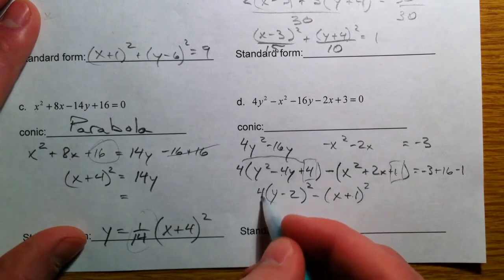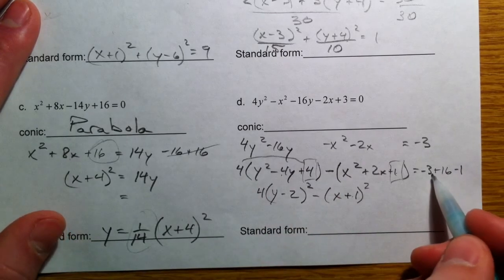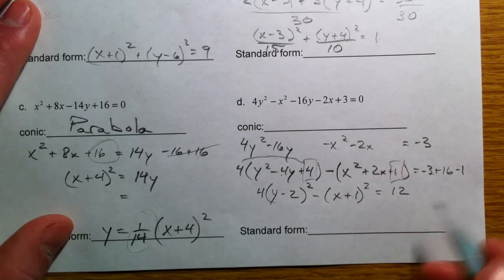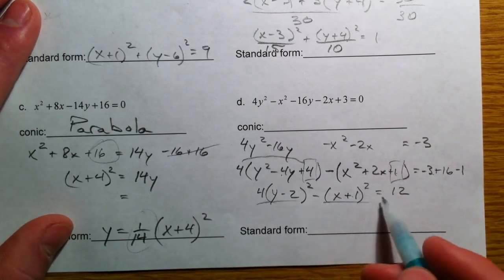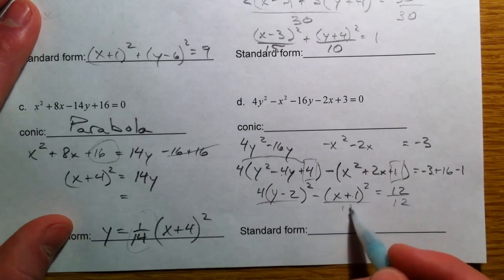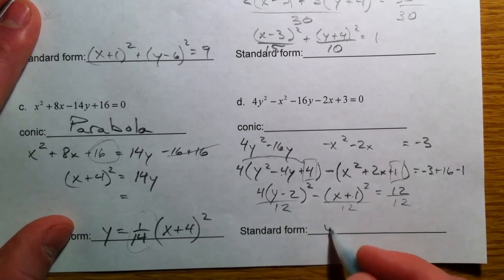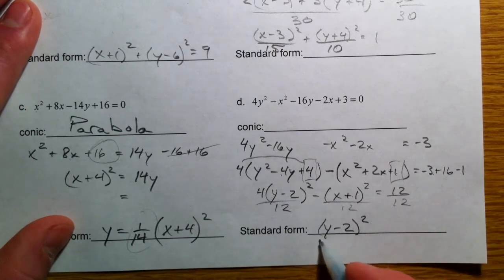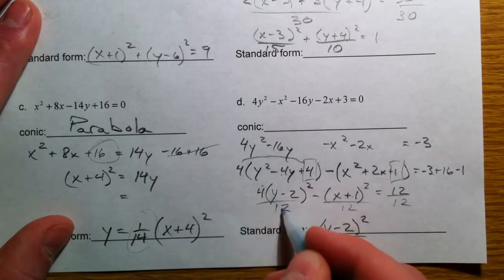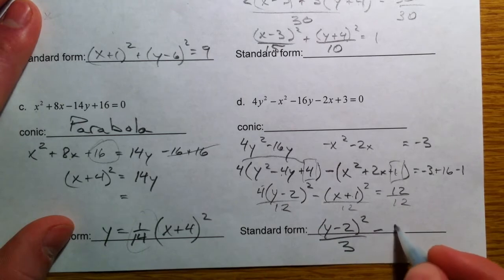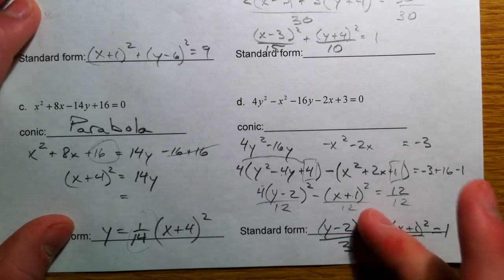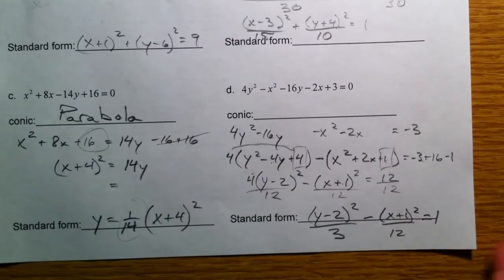We're subtracting 1. And there's a 4 here. So, 16 minus 3 is 13, 12. So, then we divide everything by 12. So, we get y minus 2 squared over 3. 4 over 12 reduces to 1 third equals 1. And there's our standard form.